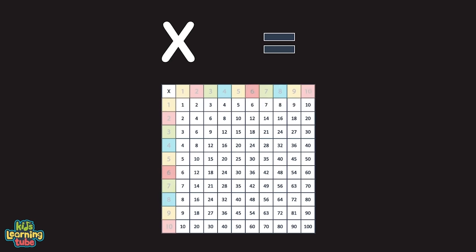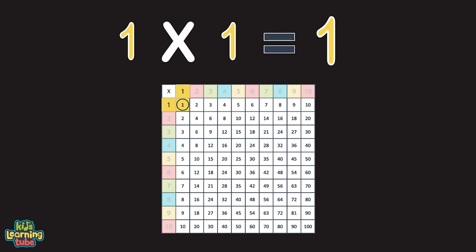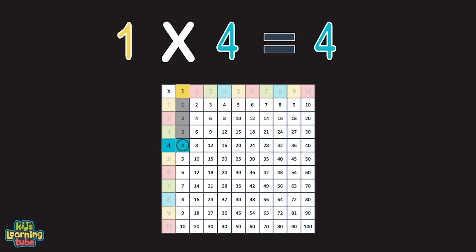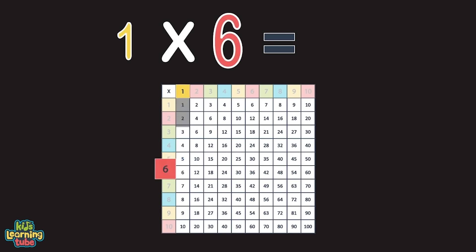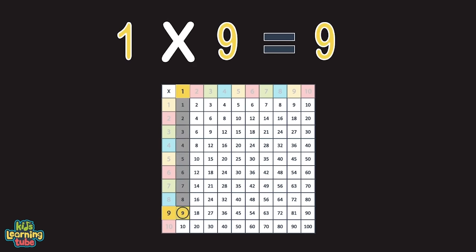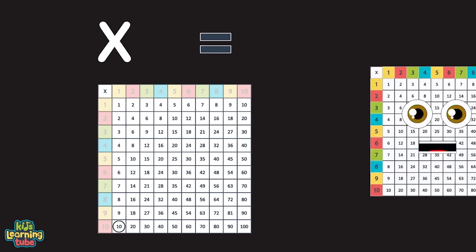And here we go, let's multiply one again. When you take a one and multiply it by a one, it equals one — the same number as it had begun. One times two equals the number two. One times three equals three. One times four equals the number four. One times five equals five. One times six equals the number six. One times seven equals seven. One times eight equals eight. One times nine equals nine. One times ten does equal ten. And here we go, let's multiply one again.